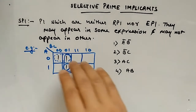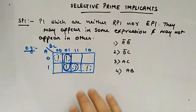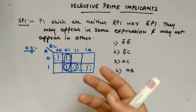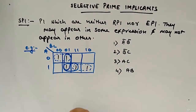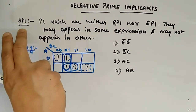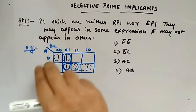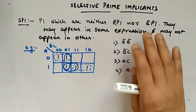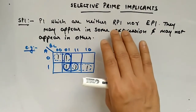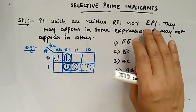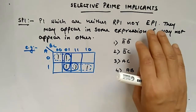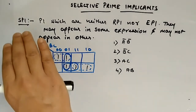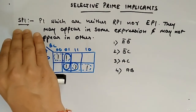Let's look at selective prime implicants now. So we have seen essential prime implicants, prime implicants, implicants, redundant prime implicants. This is the last one which is called as selective prime implicants. These are the prime implicants which are neither RPIs nor EPIs — they are neither redundant prime implicants nor essential prime implicants. Those kind of groups you have to check, and those are called as selective prime implicants.